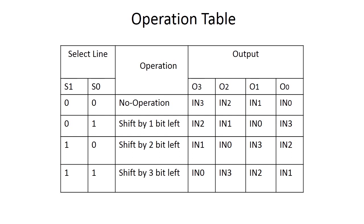Now let us start with the first combination. If the select line combination is 0,0 it simply indicates that no operation is performed. Whenever no operation is performed, output line O3 is connected to IN3, O2 is connected to IN2, O1 is connected to IN1, and O0 is connected to IN0. So whatever the input lines are, they are simply passed through to the output lines.